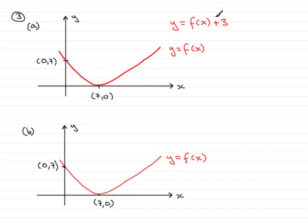Whenever you get a number on the outside of f of x, this is a translation. Translation is a sliding movement, and in this case, it's up 3 units.